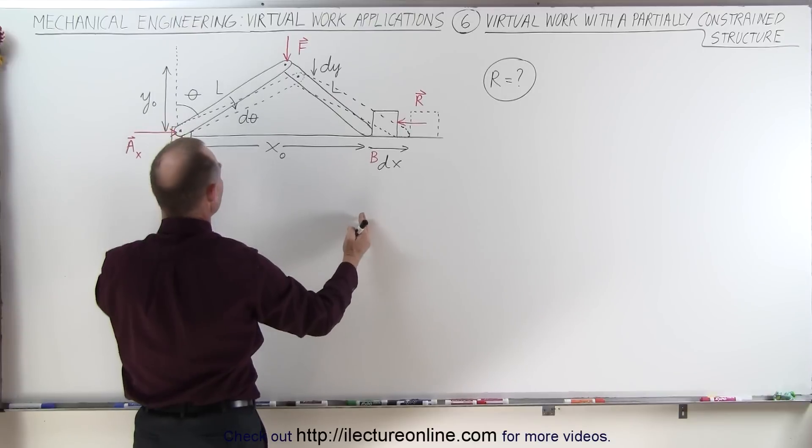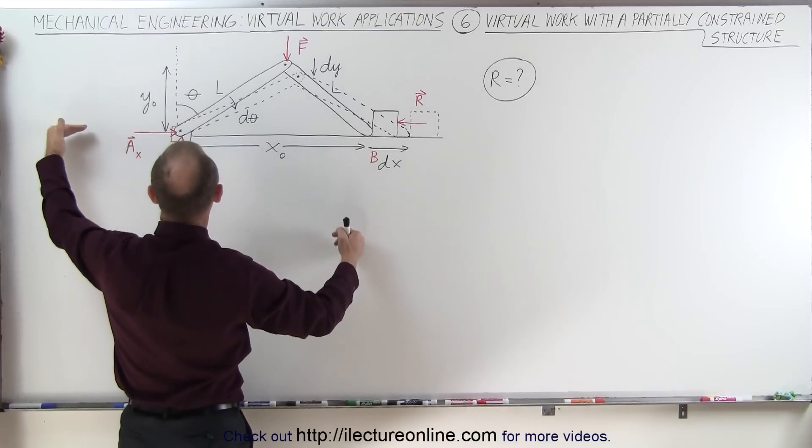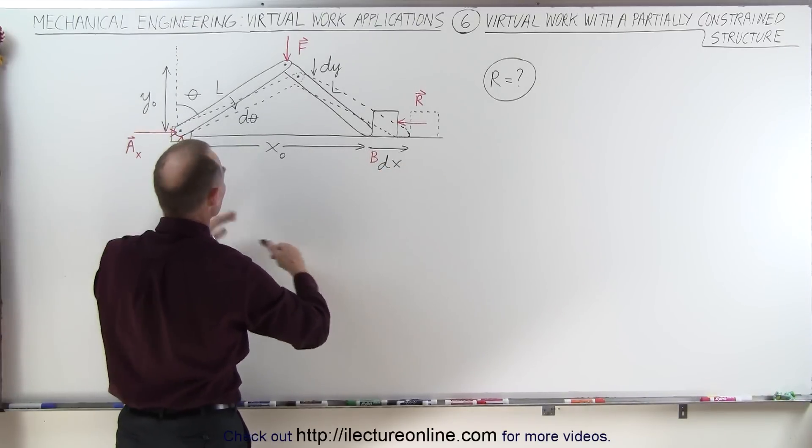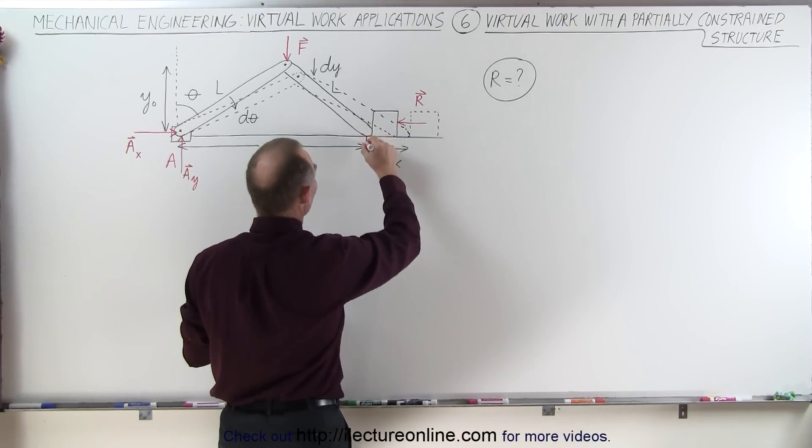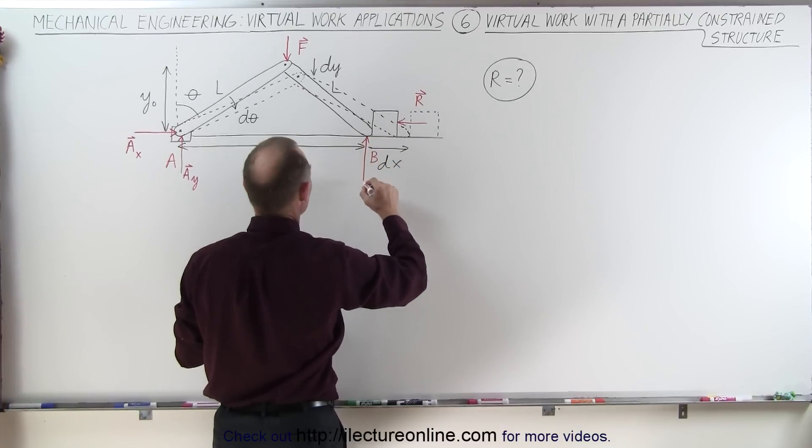We have two reactionary forces. We have one at A and one at B. Of course at A we have both one in the X direction and the Y direction. The one at B we only have one in the Y direction only. So this would be B sub Y.